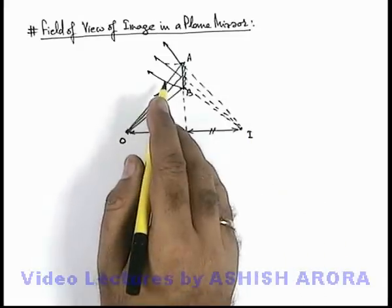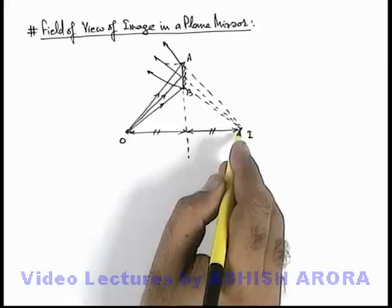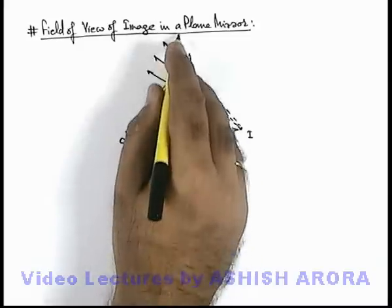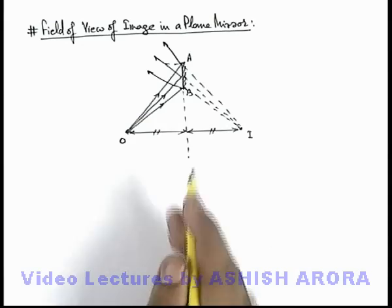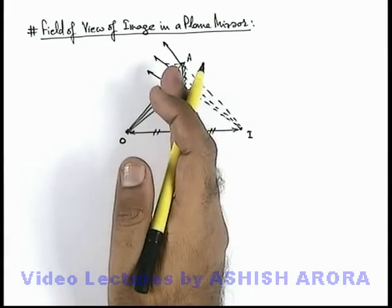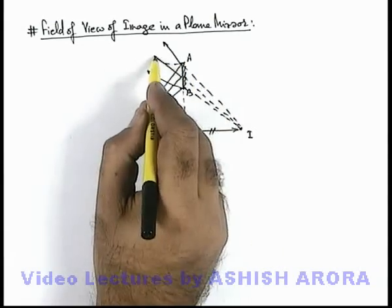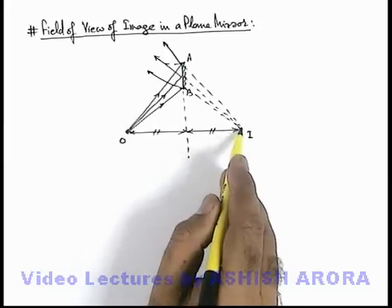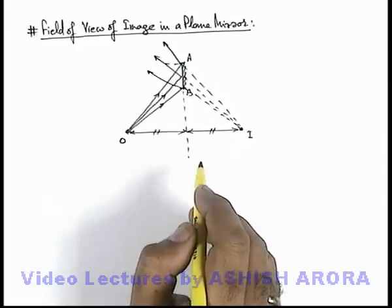Even in this situation, the image formed will be exactly similar to that formed by a complete mirror placed in front of the object. The only difference is that the number of light rays is less, so the overall intensity of the image will be relatively less.